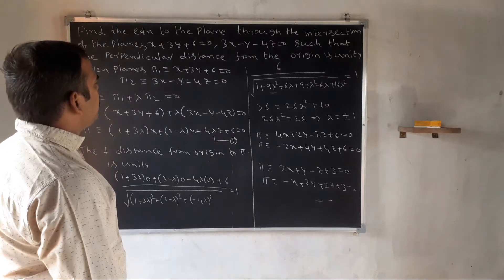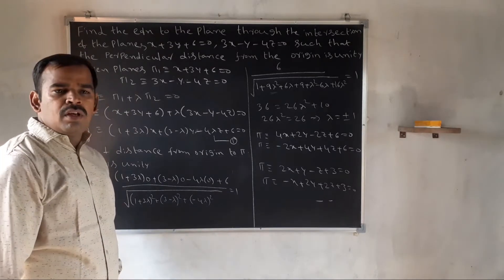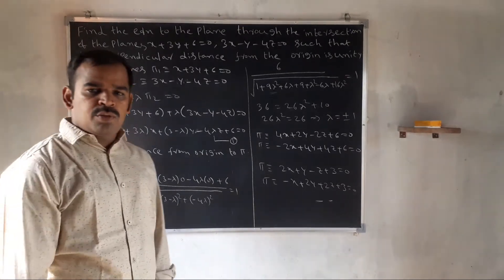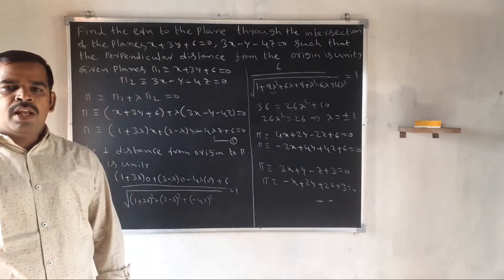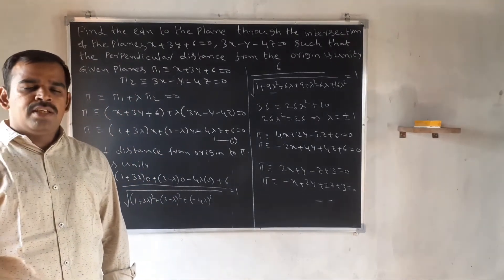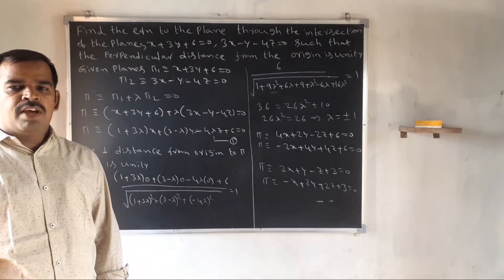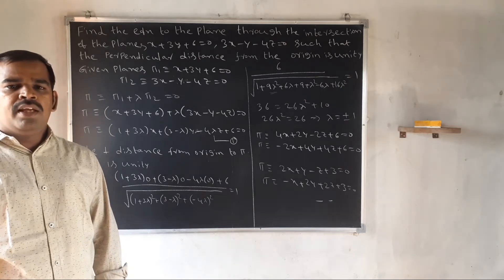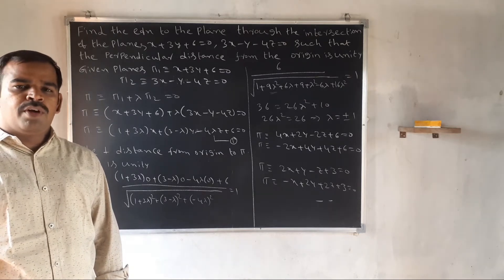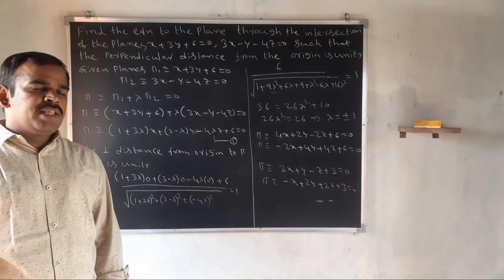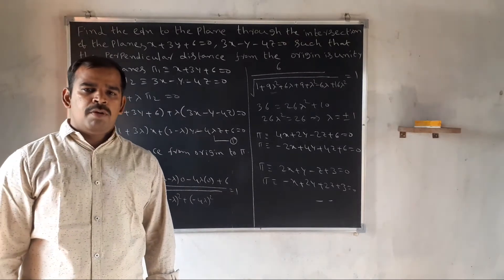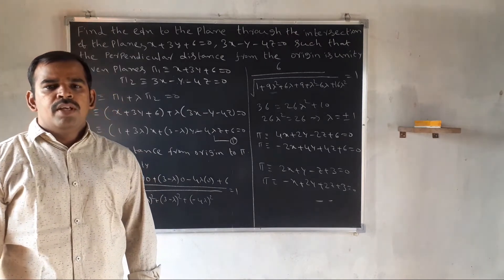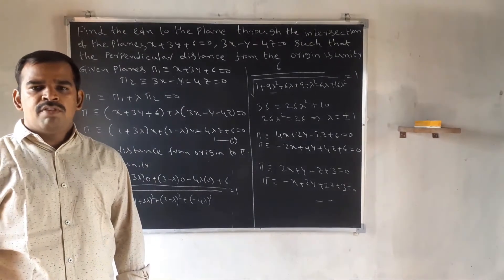The perpendicular distance from origin: the point x1, y1, z1 to the plane ax plus by plus cz plus d equal to 0 is given by the formula: ax1 plus by1 plus cz1 plus d, divided by square root of a square plus b square plus c square.